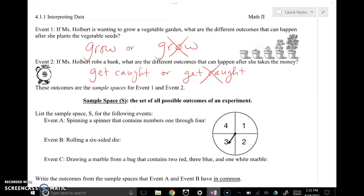In this first event, Ms. Holbert is wanting to grow a vegetable garden. What are the different outcomes that can happen after she plants the vegetable seeds? When we say outcomes, we're talking about things that could happen. So either they're going to grow or they're not going to grow. Those are the two things that can happen when I plant seeds and wait to see what happens.